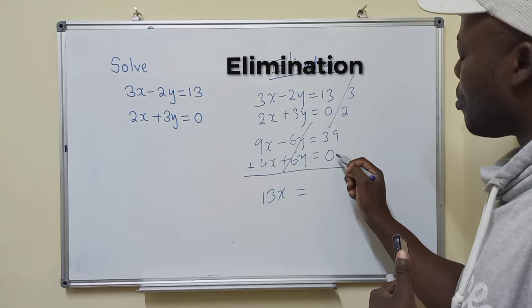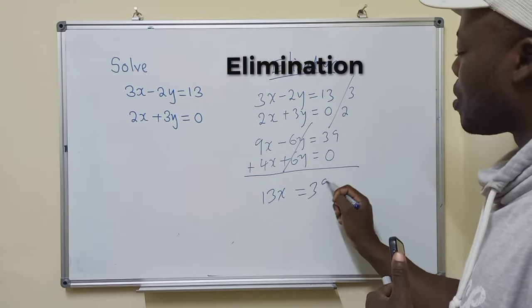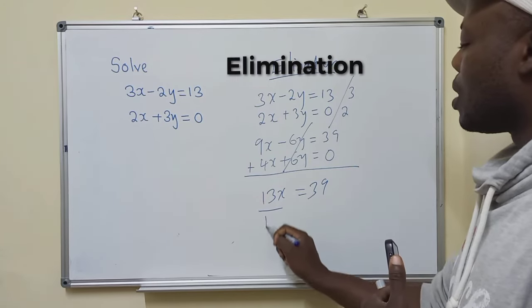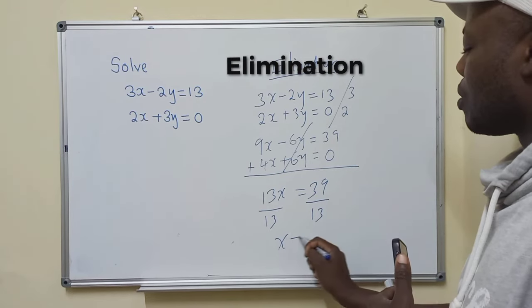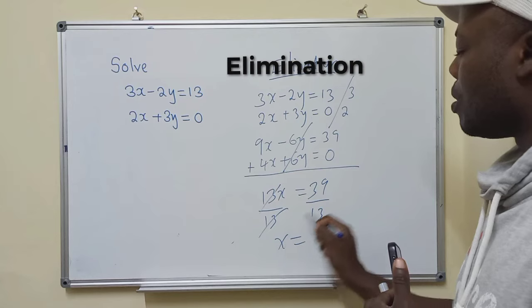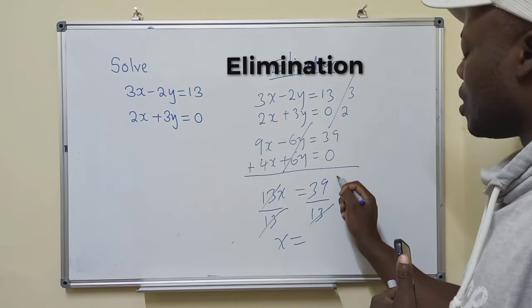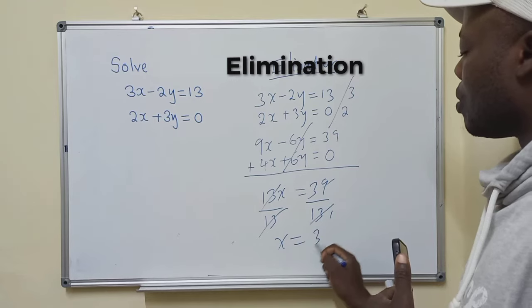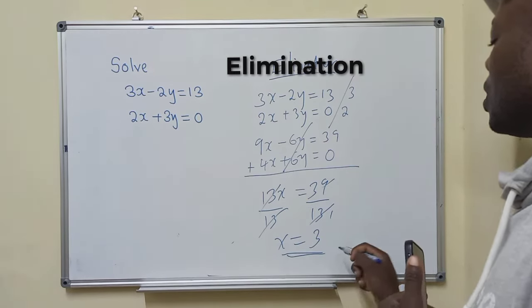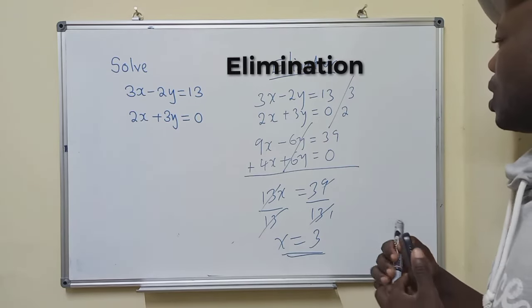Here we say 39 plus 0, it's 39. So we can divide by 13. So our x will be equal to—when we cancel here, we remain with this x. 13 into 13 is 1, into 39 equals 3. So our x value is equal to 3.